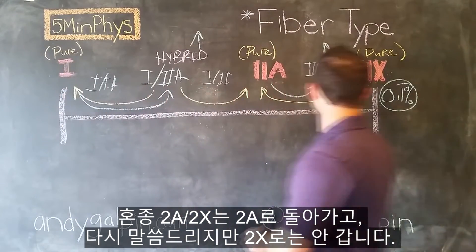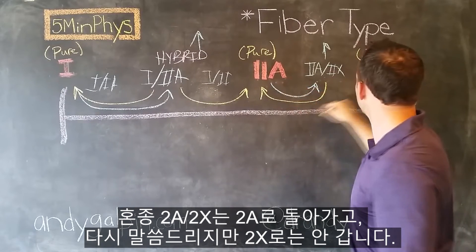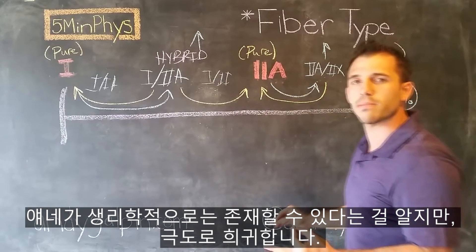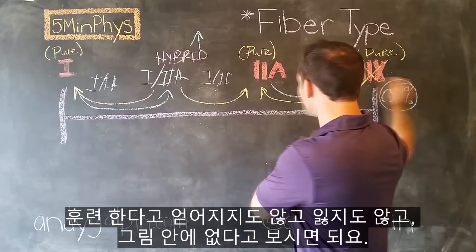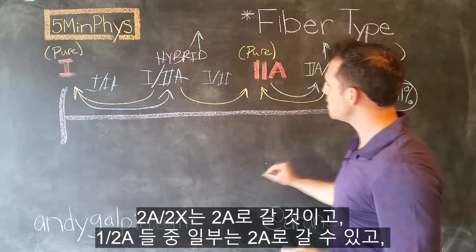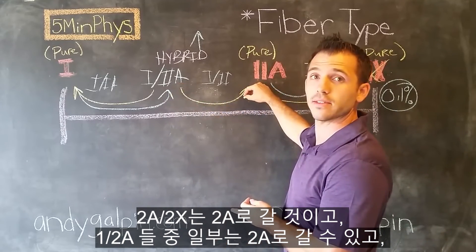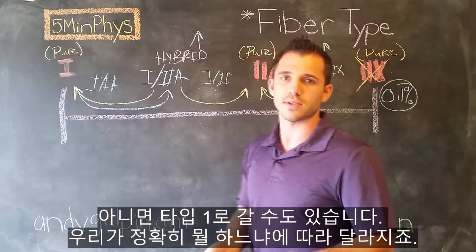We see our hybrid 2A 2Xs be converted into 2A. We don't go to 2X. Those are basically, we know that they're physiologically possible, but extremely rare. We don't gain them with training, we don't lose them really, they're just pretty much not in the picture. Our 2A 2Xs go into 2A probably. Some of our 1 2As also probably go into 2A, or they go into type 1, depending on what we do exactly.